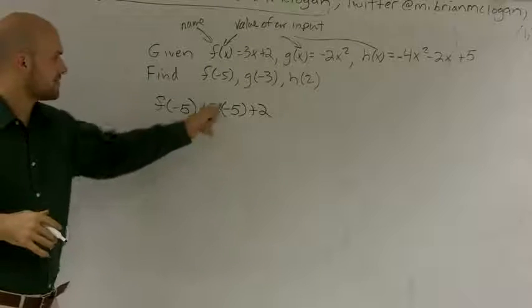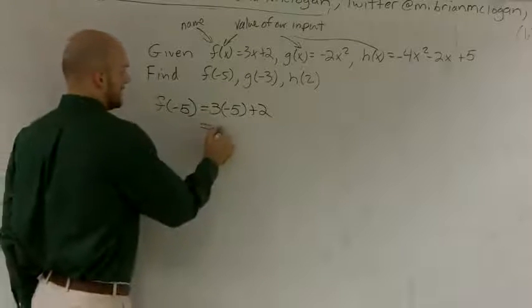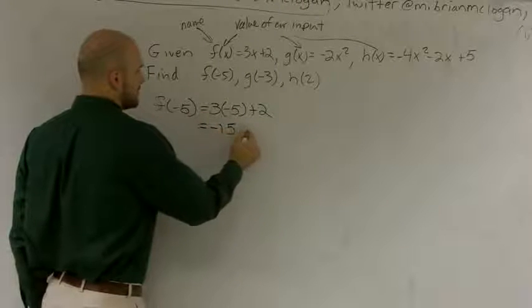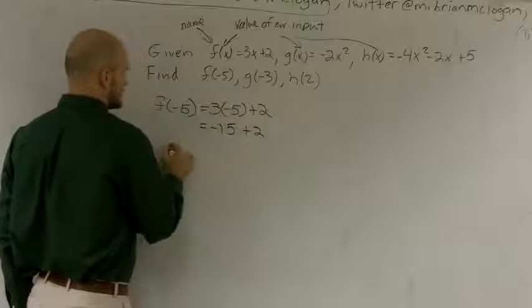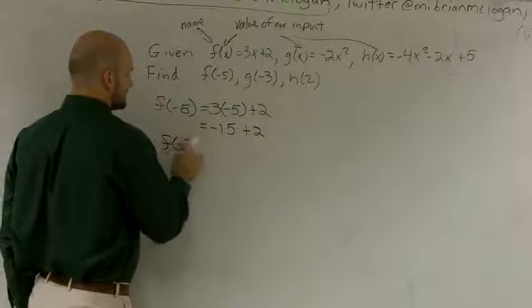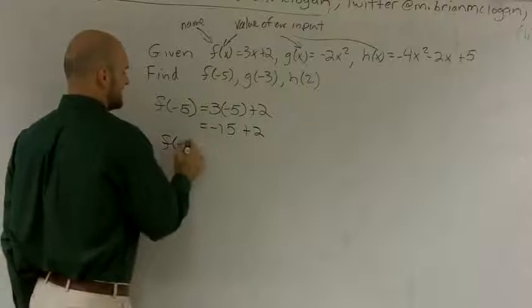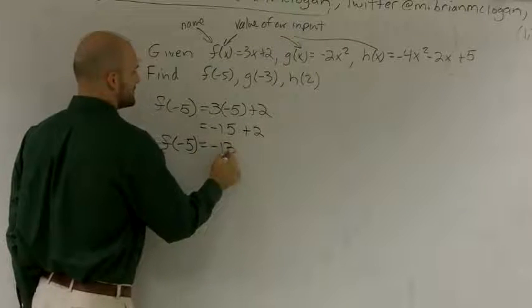Then, let's just do algebra. 3 times negative 5 equals negative 15 plus 2. So I say f of negative 5 equals negative 13.